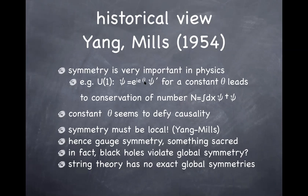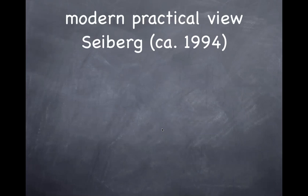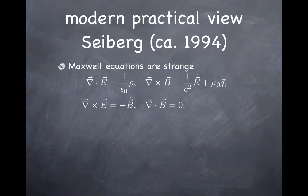The more recent view is the following. The gauge symmetry started out with the study of electromagnetism. You have Maxwell's equations; you want to solve them and use the vector potential for that purpose. But when you use the vector potential, you realize it's not unique: for the same field strength, you could have different vector potentials related by the gauge transformation. That's how it all started.